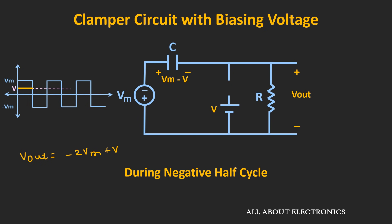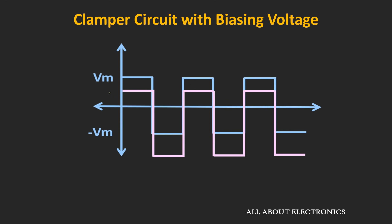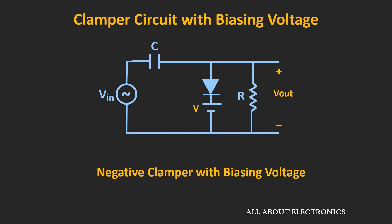During the negative half cycle, the output waveform will look like this — the peak value of the waveform will be equal to minus 2Vm plus V volts. Then once again you will get this type of repetitive waveform. So if you see the overall output waveform, it can be represented by this pink waveform — this waveform is varying from V volts to minus 2Vm plus V volts. Without this biasing voltage, the output waveform would have varied from 0 to minus 2Vm volts. But due to this biasing voltage, the entire waveform has been DC shifted by V volts. This is the negative clamper circuit with the biasing voltage.